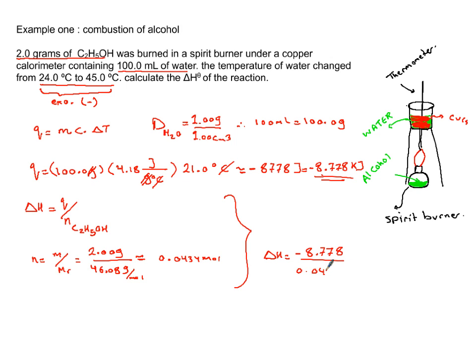Finally, our delta H of reaction is equal to minus 8.778 kilojoules divided by 0.0434. I'm going to have three significant figures, so it's minus 202 kilojoules per mole of ethanol. Now this reaction is about 50% off from the actual theoretical value.